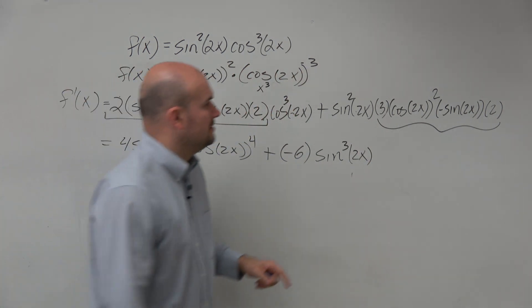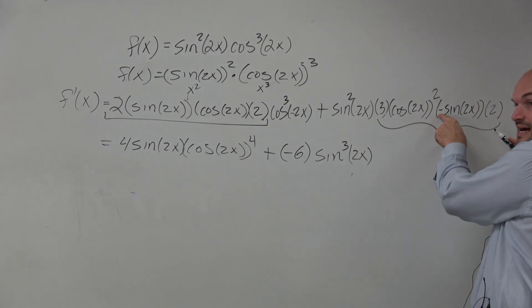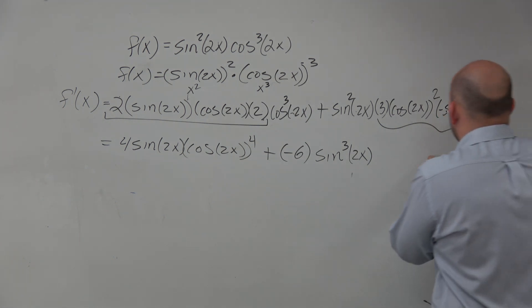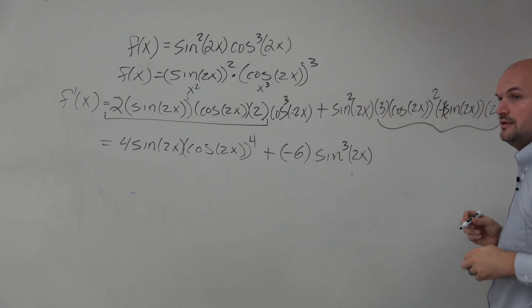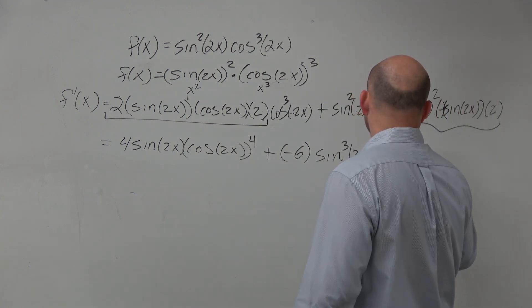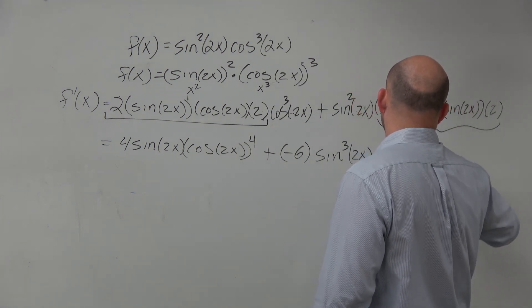Why is that 6? Because you have that negative sign. So in reality, that's really like a negative, right? A negative 1 right there, right? So therefore, the negative times 2 times 3 gives me that. And then I have a cosine squared. All right.